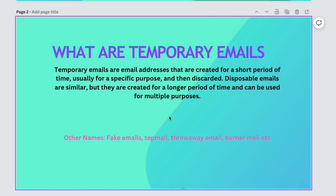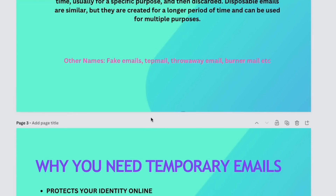What this does is — maybe you just want to generate random things to test something out — you go to these services, generate an email address, use it for what you want to do, and that's it. Your information is not out there, nobody knows. They also have other names: fake emails, stamp emails, throwaway emails, burner emails — just a lot of different names.